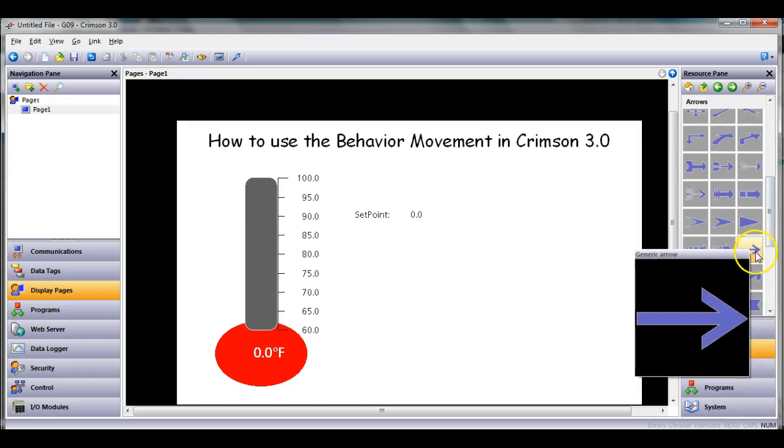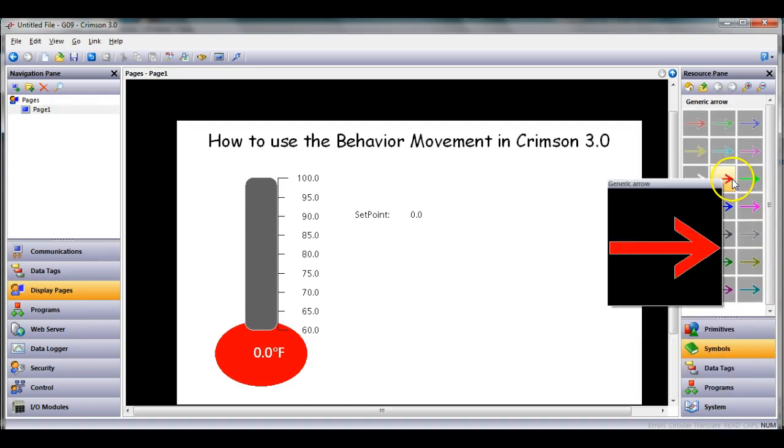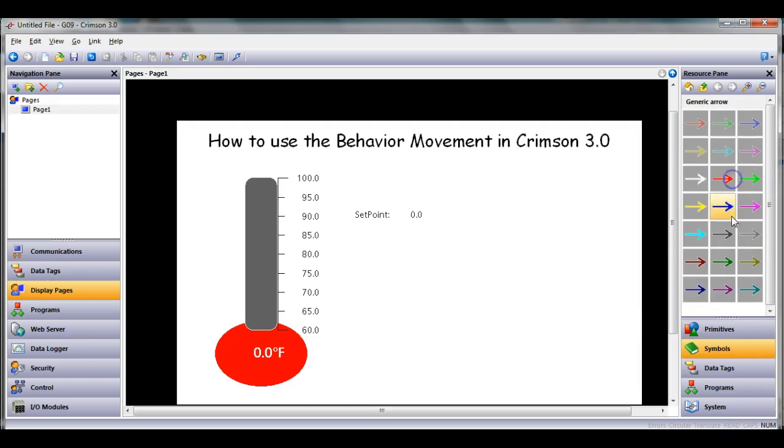If I slide down a little bit, I can find just a simple generic arrow. If I click on this one, you get all these different versions. I'll drag maybe the blue one out here like this. I want to make this a little smaller.